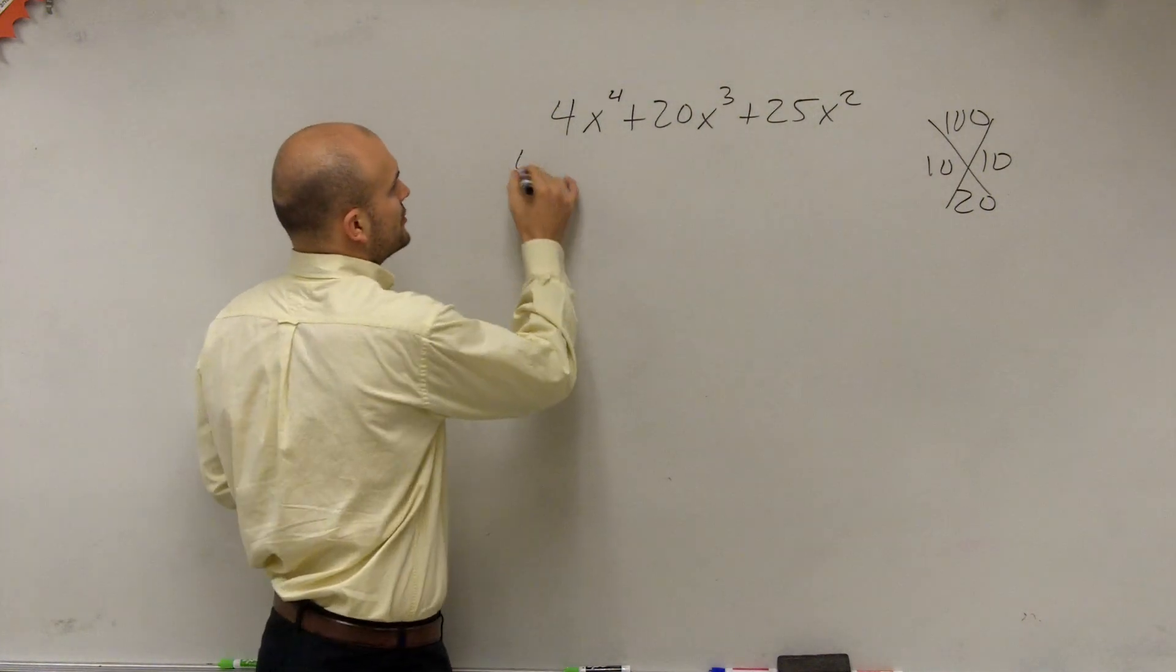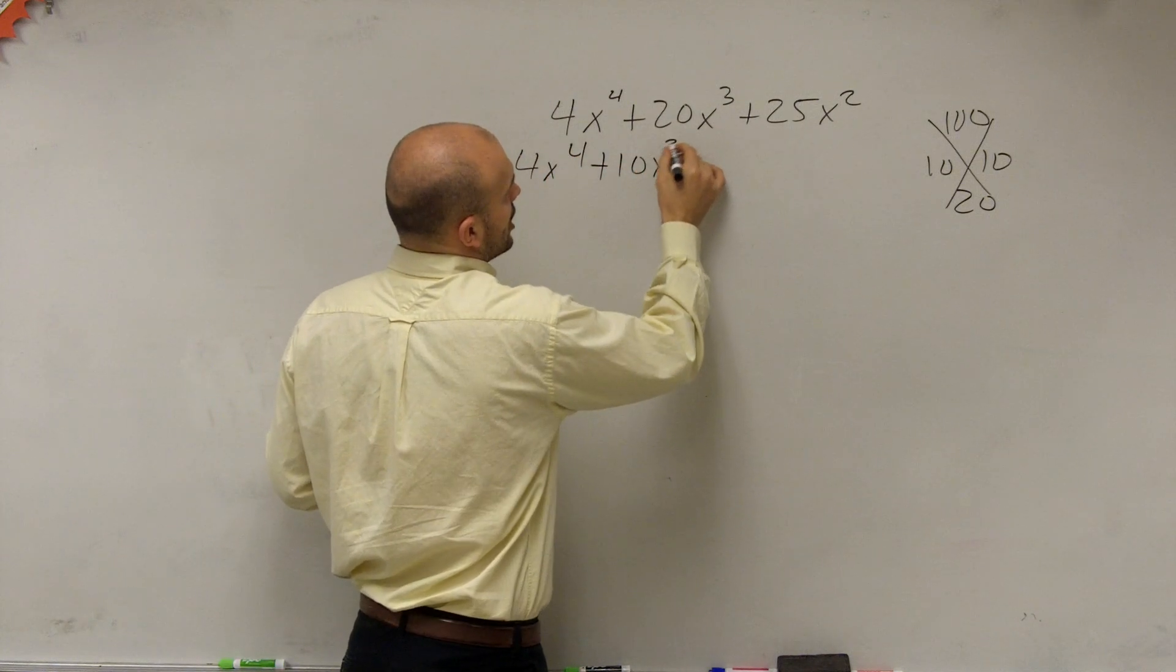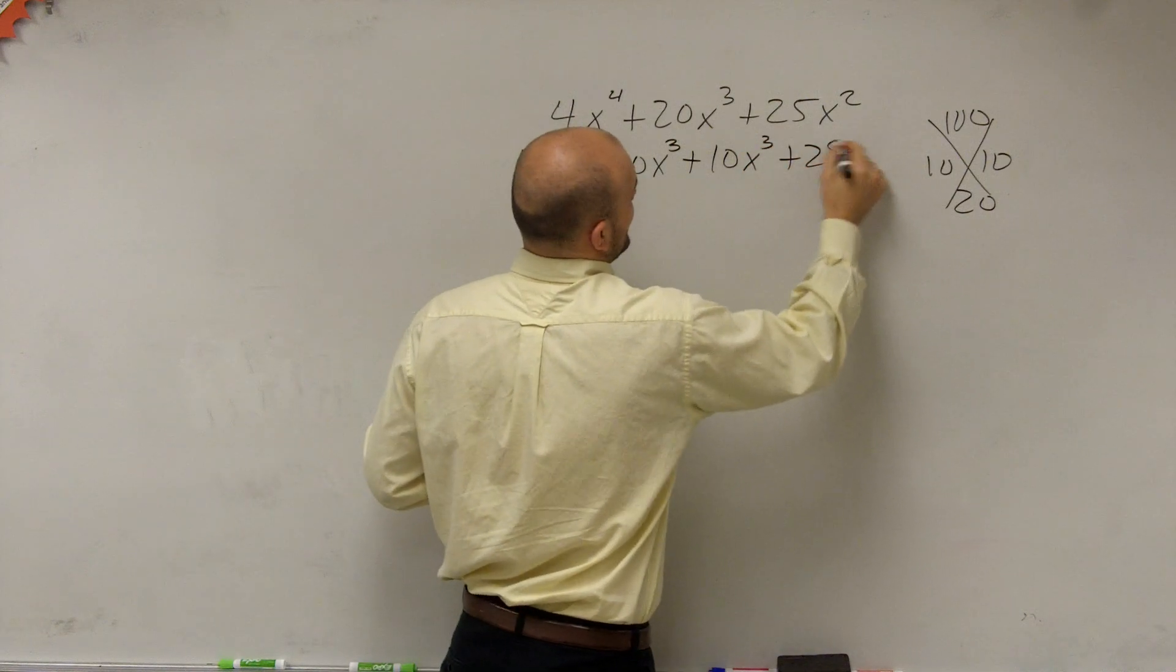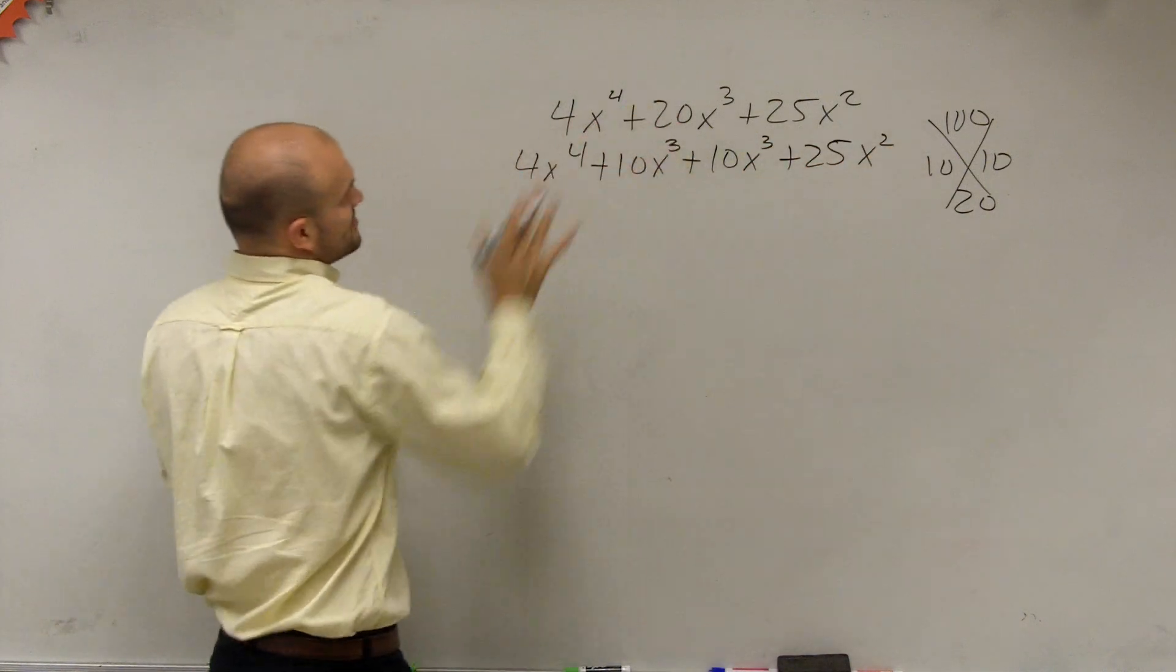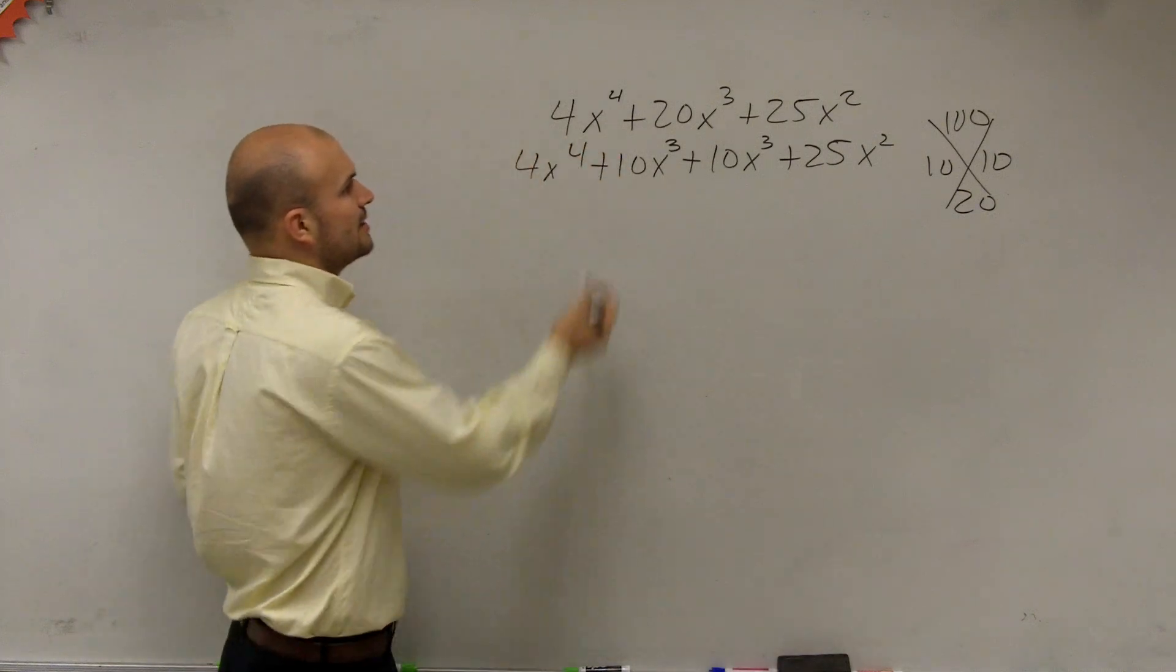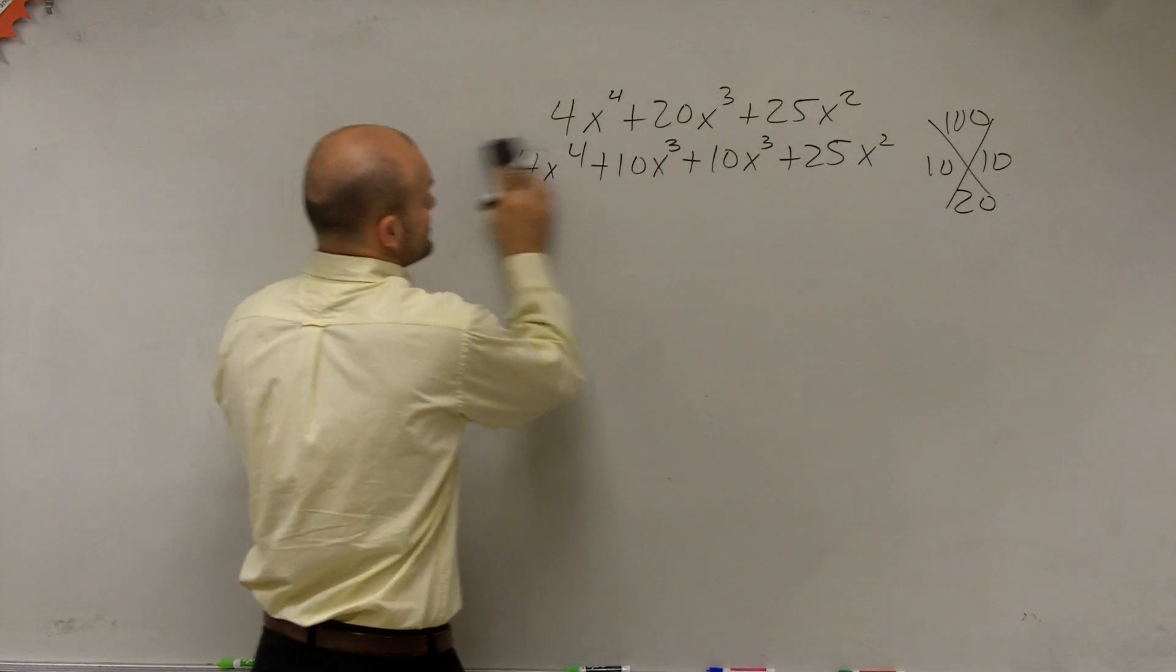And then we could do the same thing. We could go through 4x to the fourth plus 10x cubed plus 10x cubed plus 25x squared. And actually, I'm sorry, even factoring out to this, we could actually, first of all, I kind of jumped the gun, we can factor out an x squared first of all. Let's actually do that first.